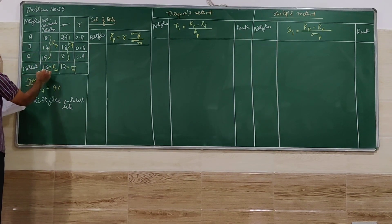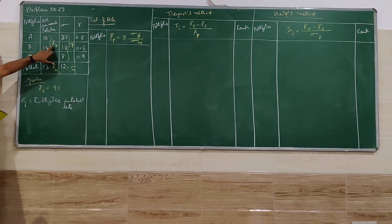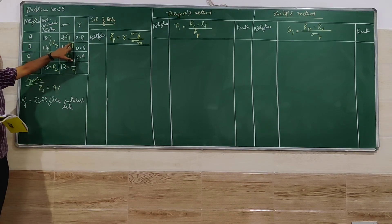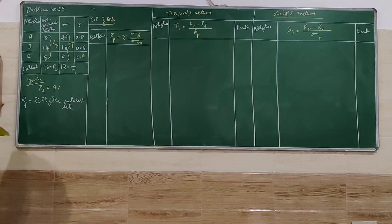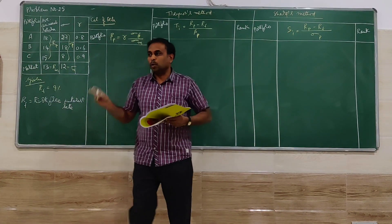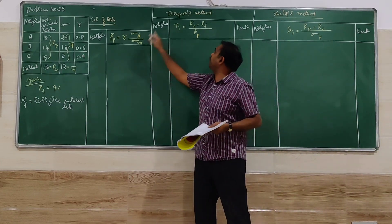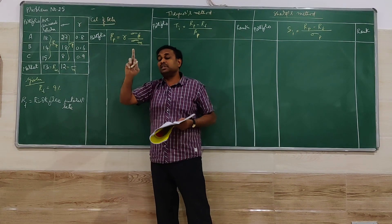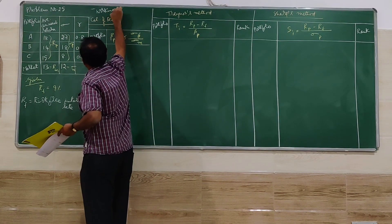Market return is called RM and market standard deviation is standard deviation of M. Return of portfolio A is 18, portfolio B is 14, and portfolio C is 15. Standard deviation of A, B, and C are also given, along with their correlations. One key piece of information is missing: beta is not given in the problem, so for Treynor's method we must first calculate beta.